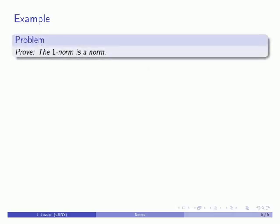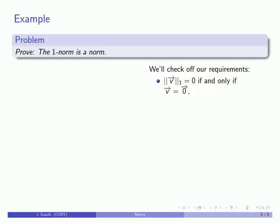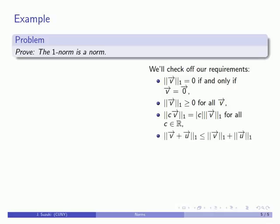Suppose I want to prove that the 1-norm is in fact a norm. We'll go back to our requirements and think about them as a checklist. First, the 1-norm is zero if and only if the vector is the zero vector. Next, the 1-norm must be greater than or equal to zero for all vectors. Next, we have the scalar multiplication requirement: the norm of a scalar multiple of a vector is the absolute value of the scalar times the norm of the vector. Finally, the triangle inequality: the norm of the sum of two vectors must be less than or equal to the sum of the norms of the vectors.